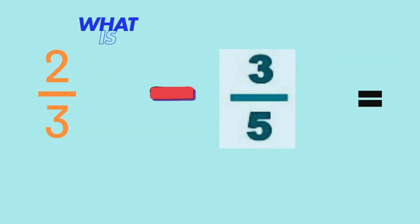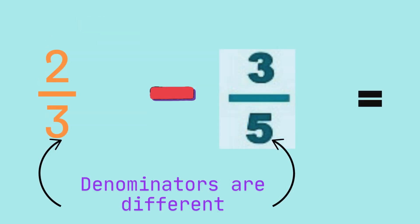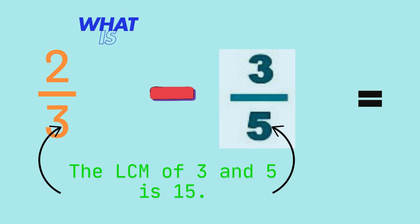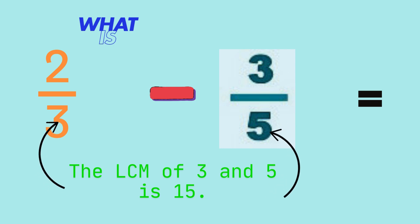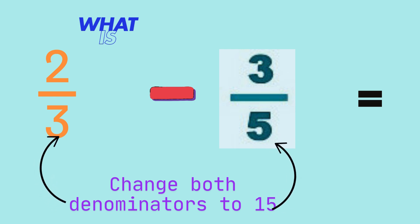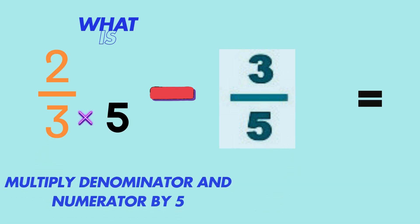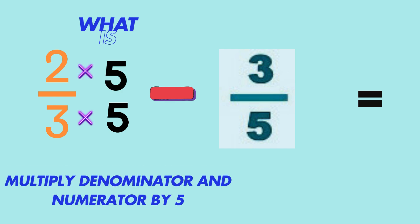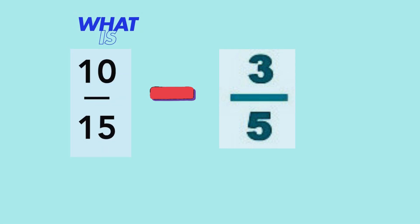Now let's try two-thirds minus three-fifths. Again, the denominators are different. The LCM of three and five is fifteen. So, we will make both denominators be fifteen. For the fraction two-thirds, we have to multiply the denominator by five. We also need to multiply the numerator by five to keep the fraction equivalent. So, two-thirds is now rewritten as ten-fifteenths.